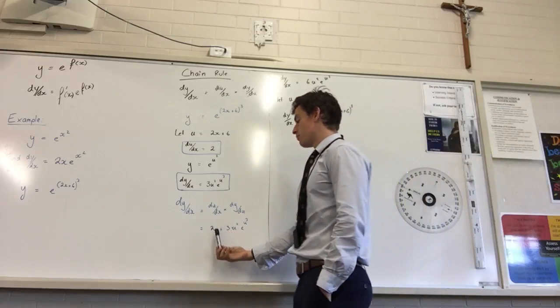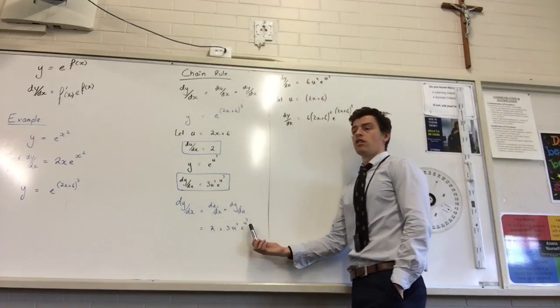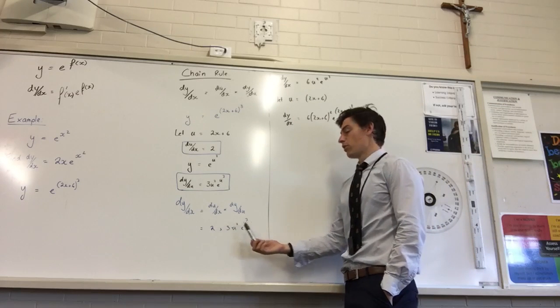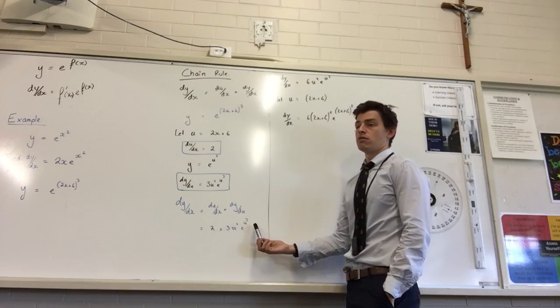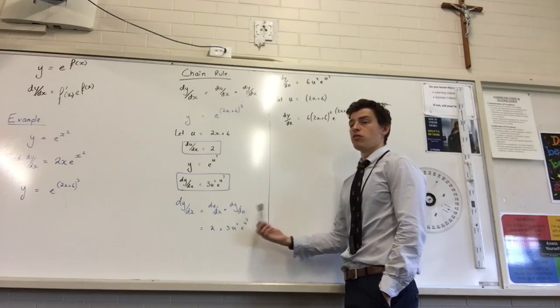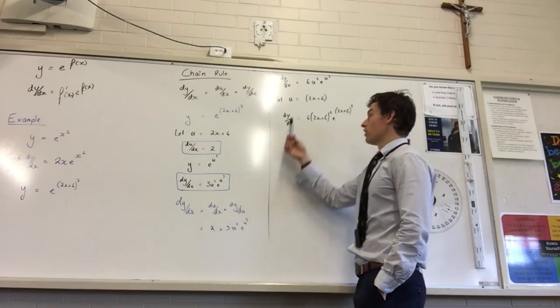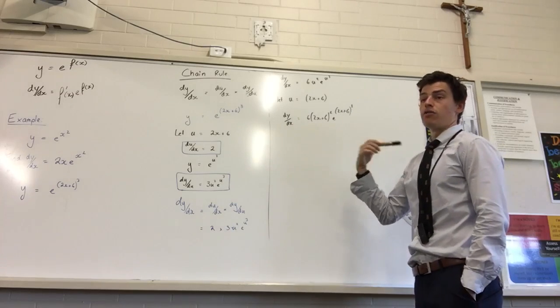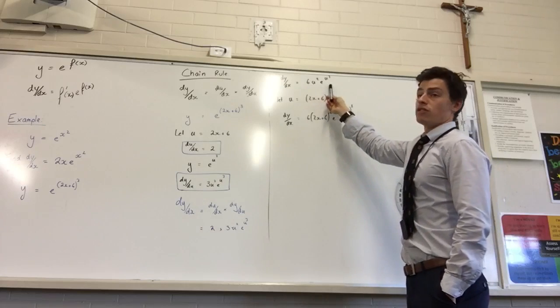I simply then just sub my values in. Now I've kept my u's here. What I'm going to do with those u's later on. Do I want u's in my final answer? I need to substitute them back to their original value of 2x plus 6. I get to my final sum.